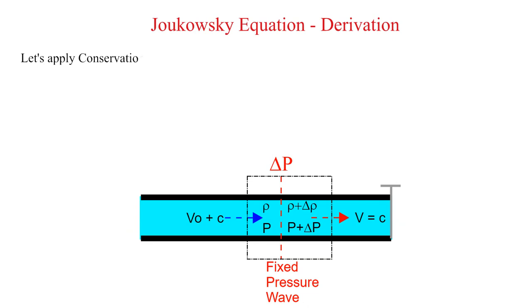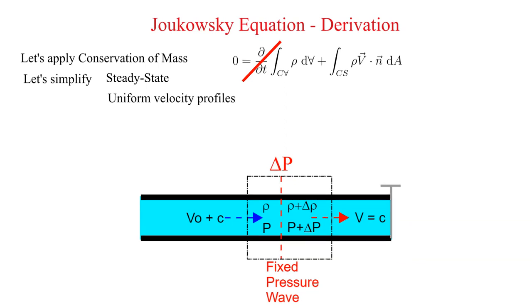First we will apply conservation of mass. Our analysis will be for steady state conditions and the velocity profiles are uniform. There are two surfaces that have flow crossing their boundaries, the inlet point 1 and the outlet point 2. We will not go into the details on how to apply these integral conservation laws. Please see my other instructional snippets for those details.